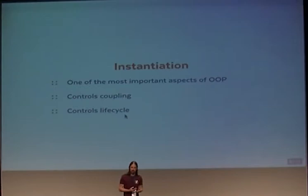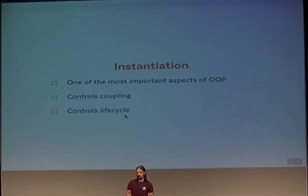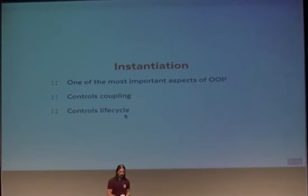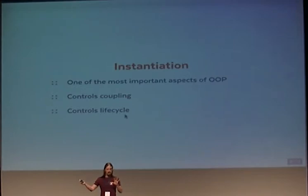Instantiation of objects is one of the main aspects of object-oriented programming. Without instantiation, you don't have object-oriented programming — you just have classes that don't do much. You should always think very hard about where and how you instantiate. Instantiation controls coupling: if you write 'object = new class', you've immediately coupled that code to the actual implementation of that class. If you rename the class, the other code using it will break — that's a hard coupling, and we want to avoid direct coupling as much as possible.